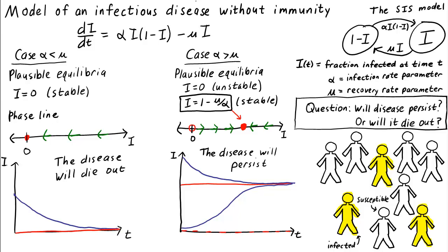So if we hope the infection will die out, we hope we're in the case where alpha is less than mu, or hope that somehow we can change the situation to make alpha less than mu, so that we'll be in the happier state where the disease will die out.